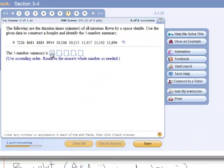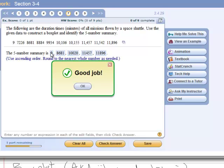And five number summary. Let's go ahead and plug them in here. 9, and then we had 8681, and then 10,020 was the median, and 11,457, and 11,896. Good job.